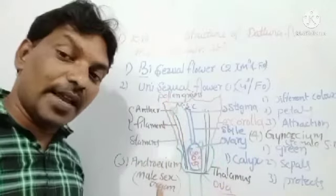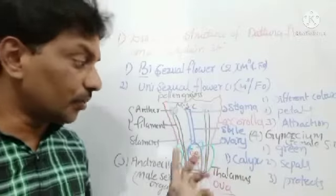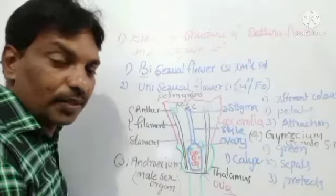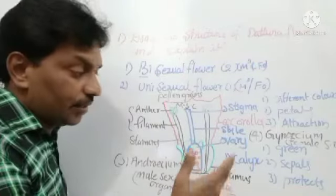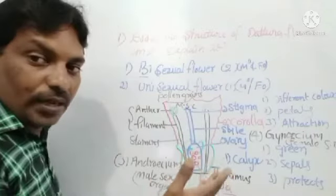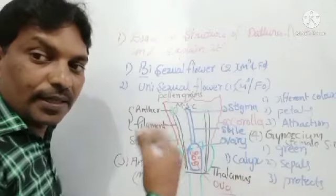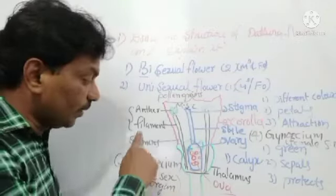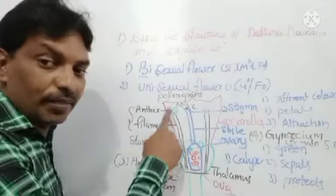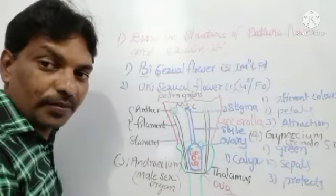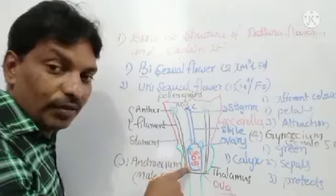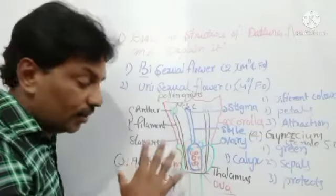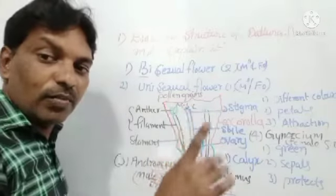To summarize: calyx is the first part — green color, contains sepals, protects the flower. Corolla is the second part — different colors, contains petals, attracts other organisms. Androecium is the third part — five stamens, each with filament and anther, pollen grains inside the anther are the male sex cells. Gynoecium is the fourth part — female sex organ, contains ovary, style, and stigma; inside the ovary are ovules which are the female sex cells. Both sex organs are present, so it is a bisexual flower.